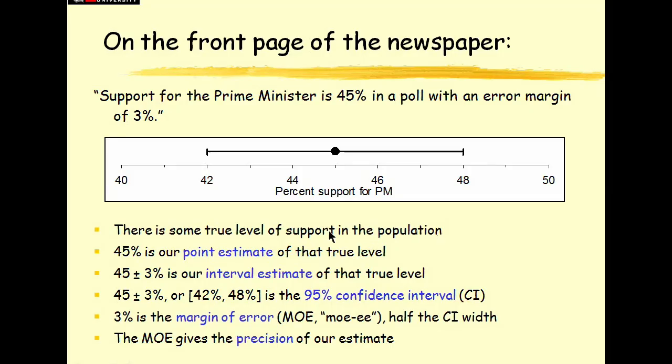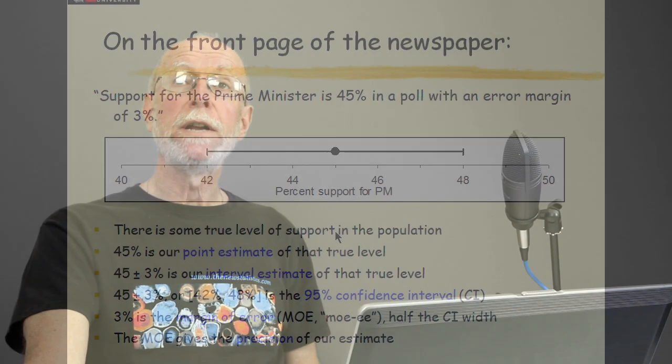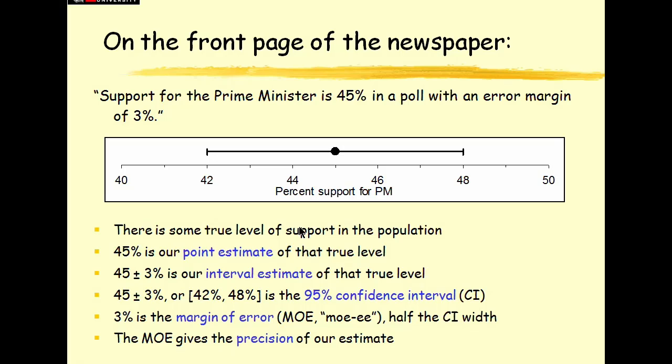We have in mind that out there in the population there's some sort of true level of support for the Prime Minister. But we'll never know that unless we can hold a general election or have a survey of everyone in the country, and that's not really practical. So we take a sample, maybe of 1,000 people, and we'll assume it's a random sample. Let's assume we take fully random 1,000 people and ask them about their support. Well, our survey showed 45% of the sample supported the Prime Minister. So that's our point estimate of the true level of support in the population.